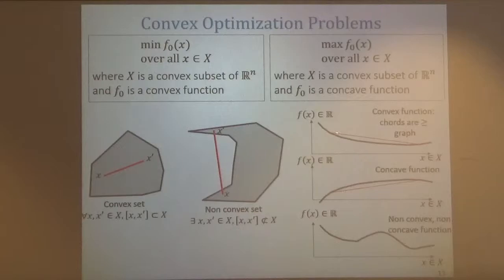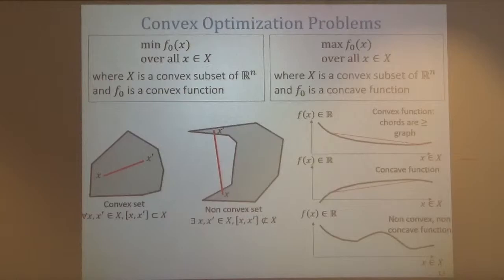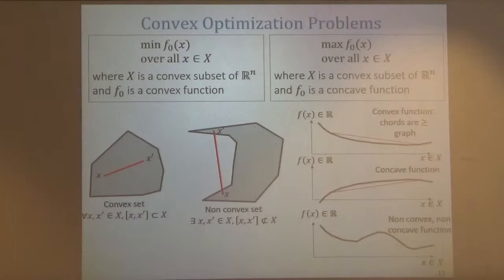A convex function is one such that the graph lies below the chord: if I put a straight line between two values of the function, all intermediate values on the straight line are above the true value. Concave is the opposite. Most functions are neither convex nor concave — like the sine function, which is locally convex and locally concave, but globally neither.